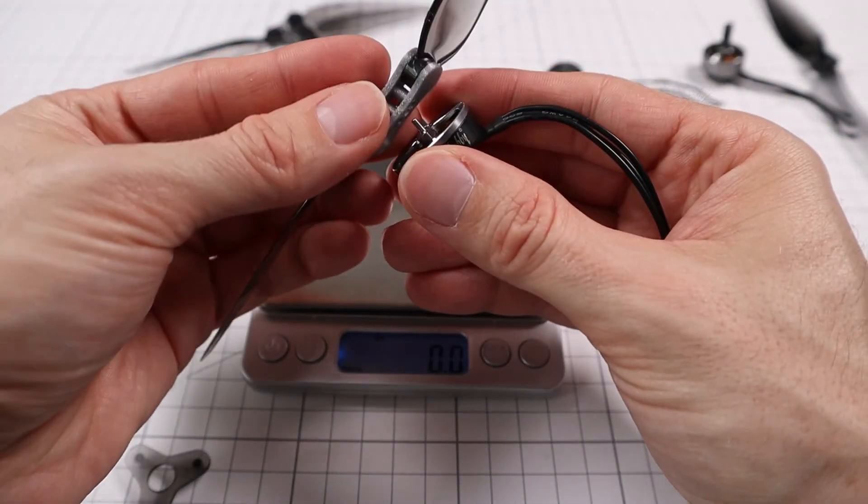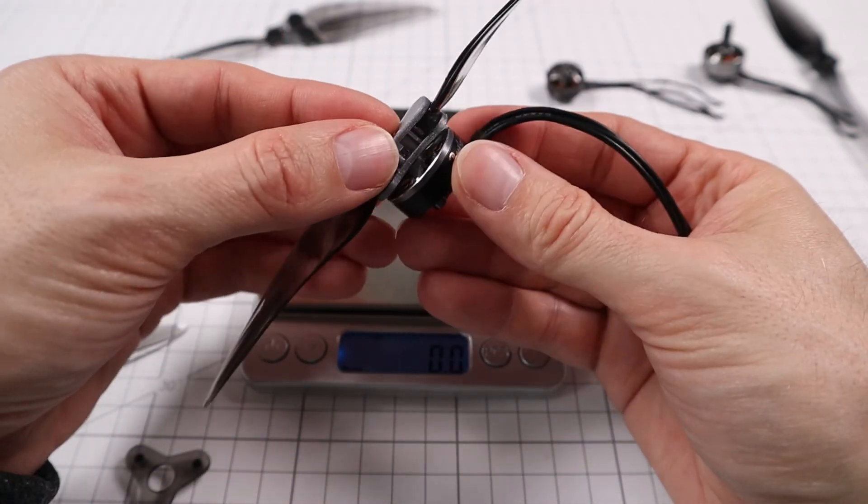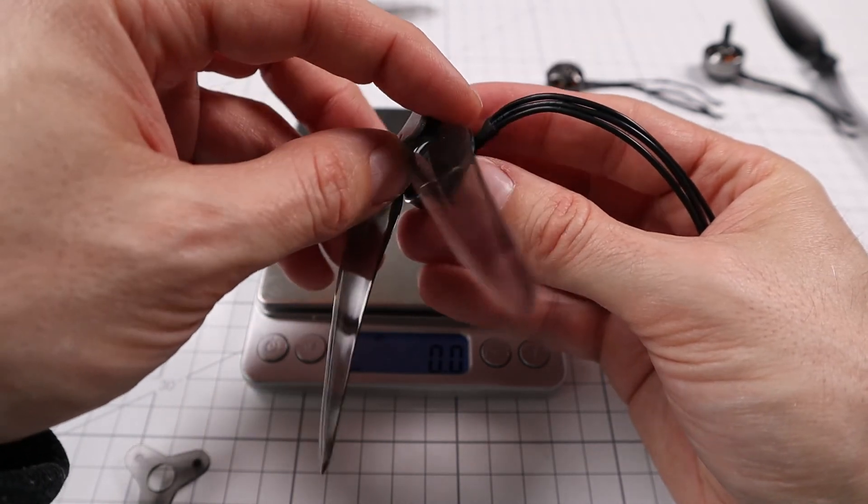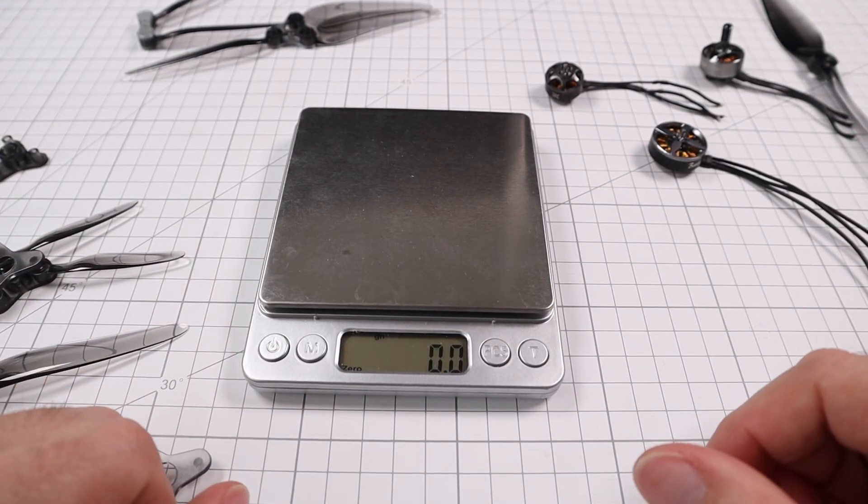That's it. With this you can mount any folding propeller on a T-mount motor, which gives you a lot more flexibility. Also you can get a two-blade version where usually there only is a three-blade version available. That's it for my side, I hope this was helpful. Thank you, bye!